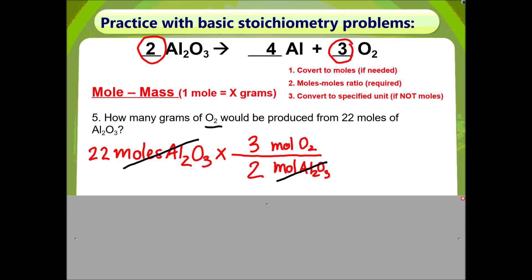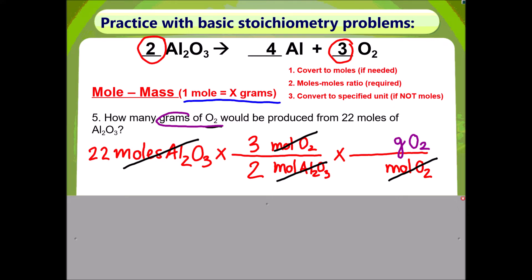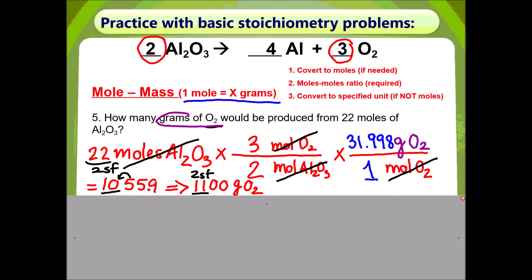Now Step 3: convert to specified unit if not moles. The question is asking for how many grams of O₂. Therefore, I need to put moles of oxygen on the bottom so it cancels out, and put grams of oxygen on top to answer the question. The numbers correspond to the conversion factor where 1 mole equals x grams — in this case, x is the molar mass of O₂, which is 31.998 grams. The calculator answer is 1055.9, but according to the given I can only have 2 sig figs. Therefore these 2 numbers matter, and before the 5 goes away it rounds up that 0, giving a final answer of 1100 grams of oxygen.